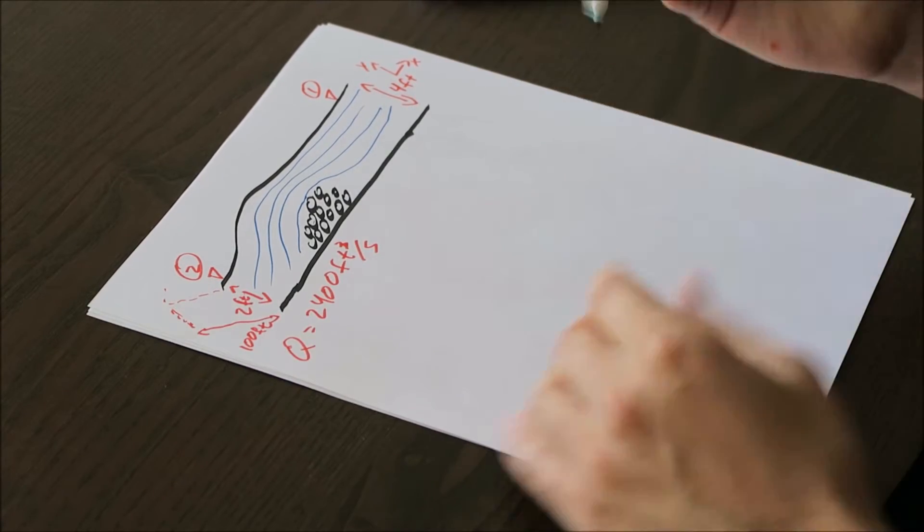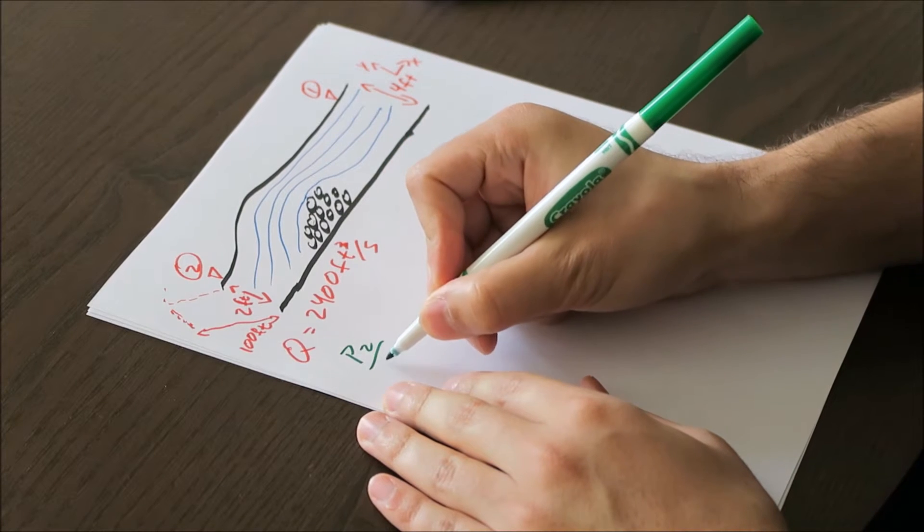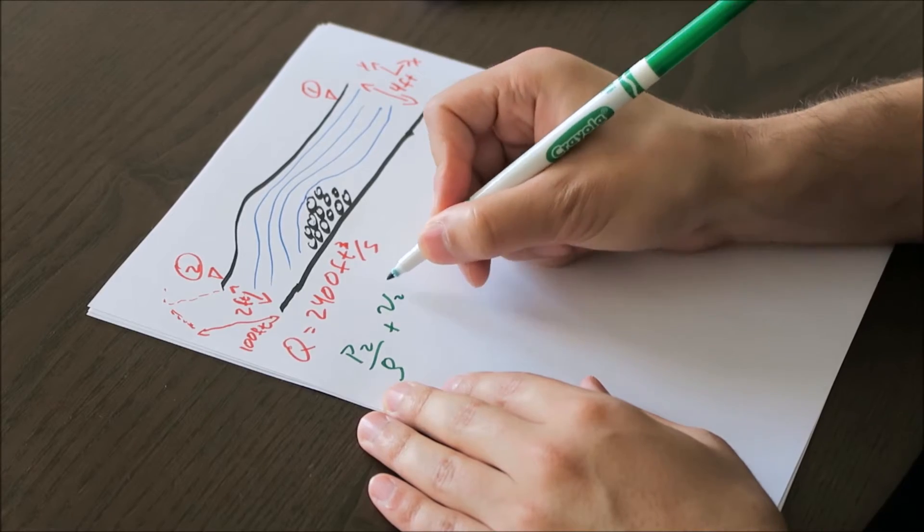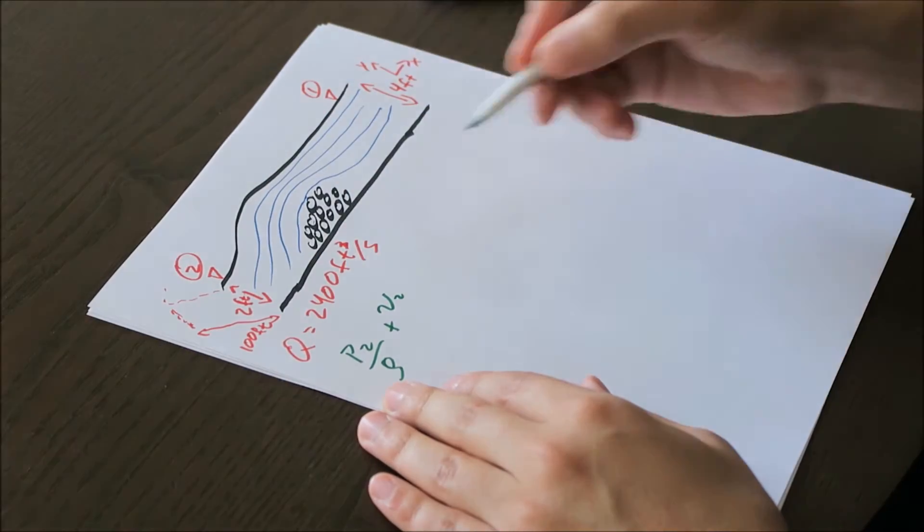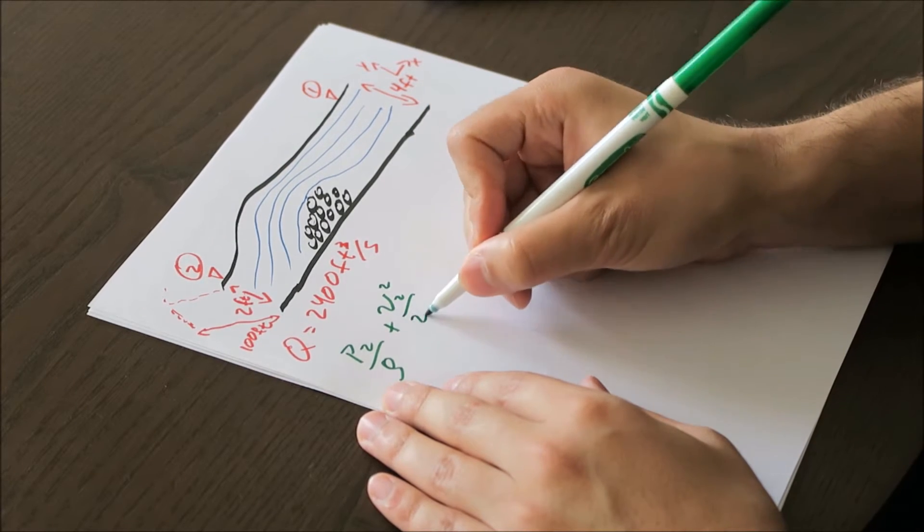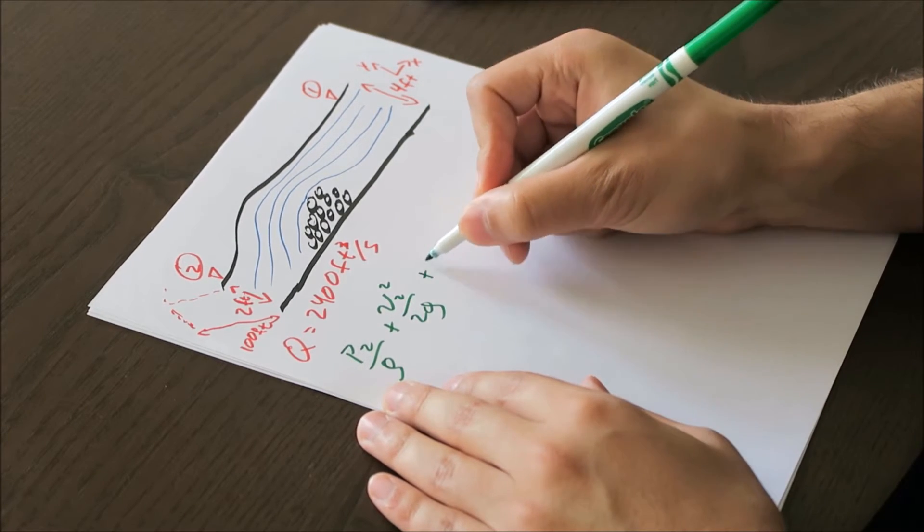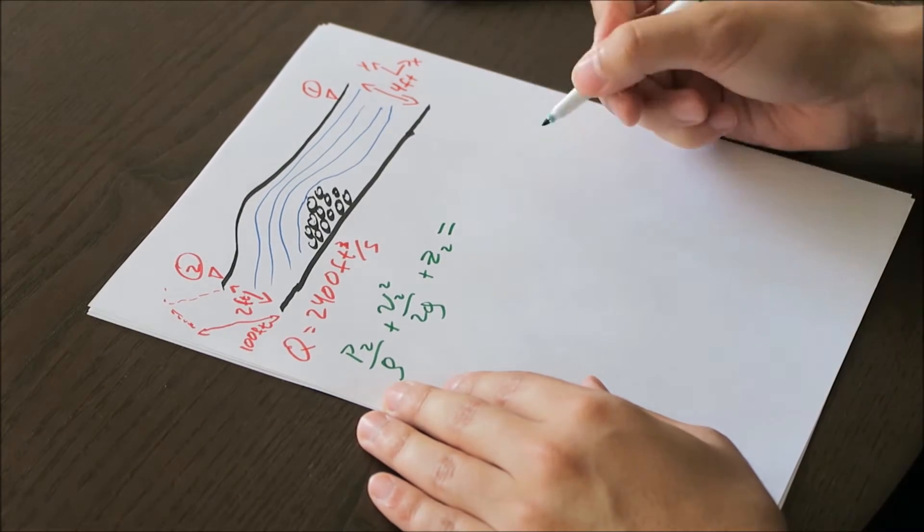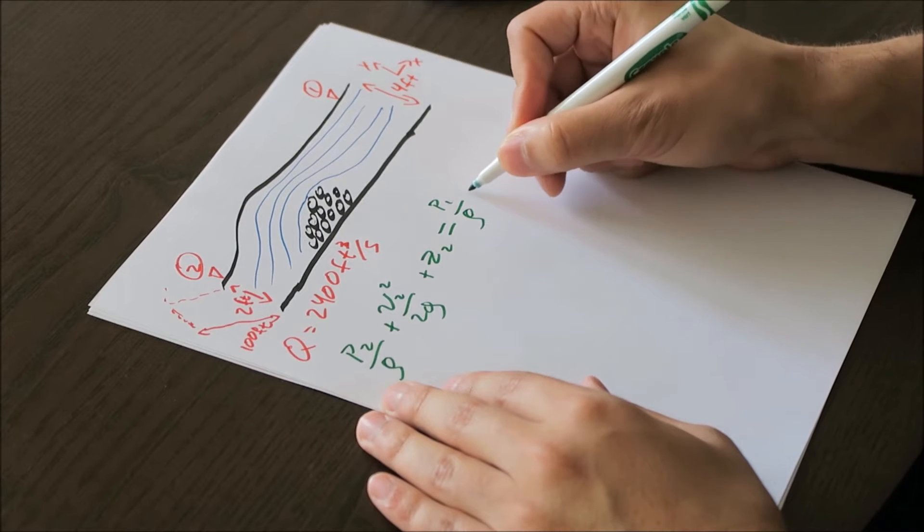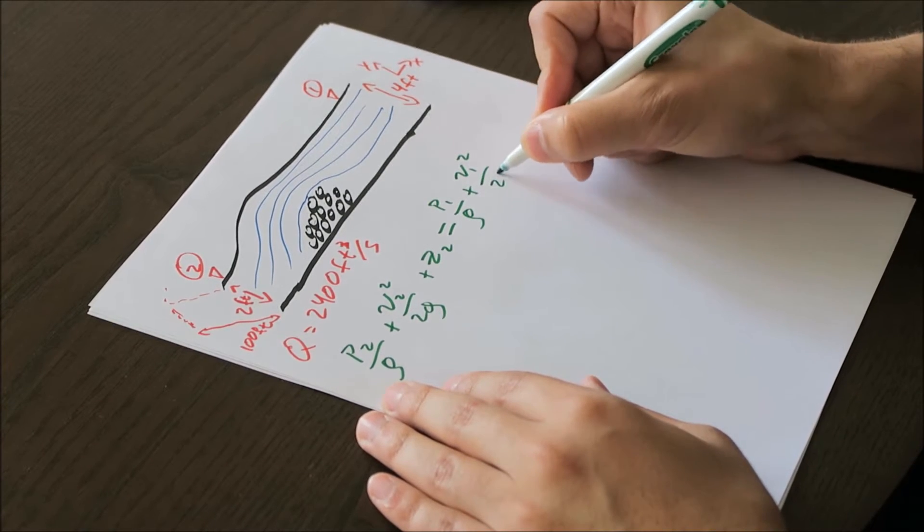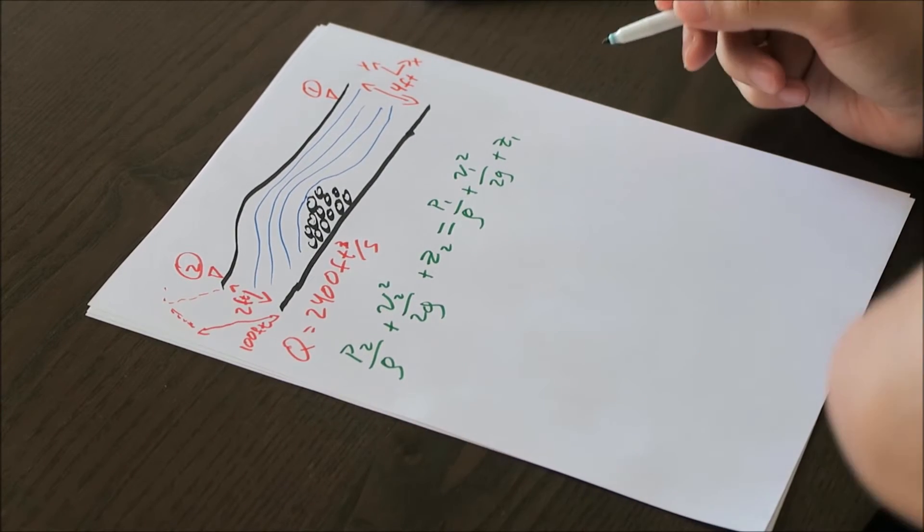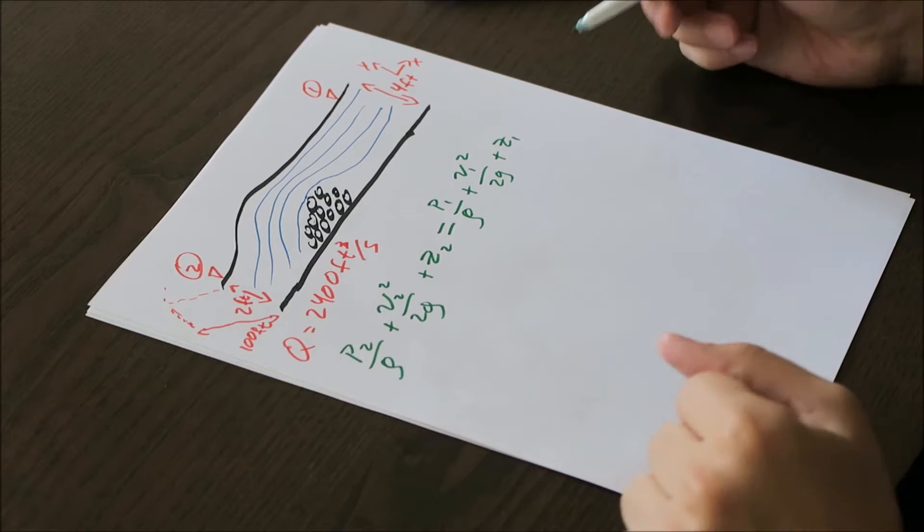Bernoulli's, we're going to use this form over here, where we'll have P2 over rho plus our velocity term. And again, I'm keeping the second side on the left, and I'll keep the first side on the right. Our velocity term squared divided by 2g plus z2. And that's going to equal everything on our right-hand side, which is again, our P1 over rho plus V1 squared over 2g plus z1. Now there's our Bernoulli's, it's standard, what I'll call it, standard form.